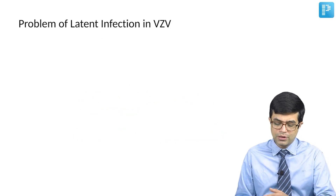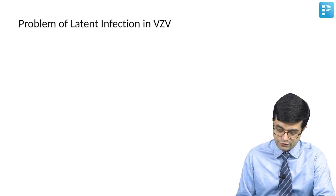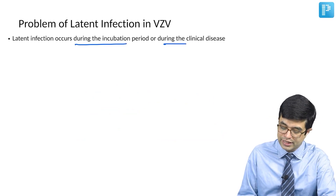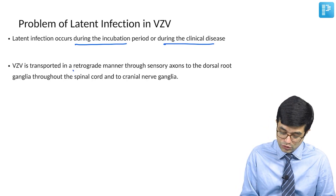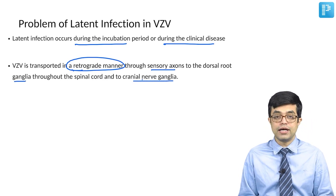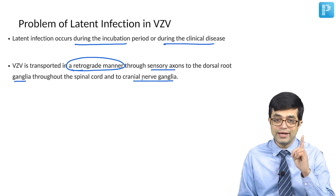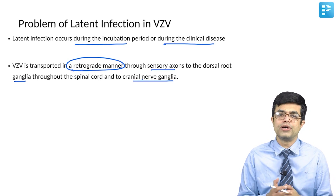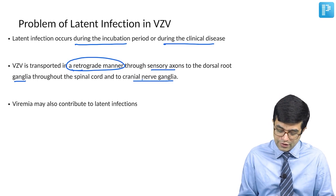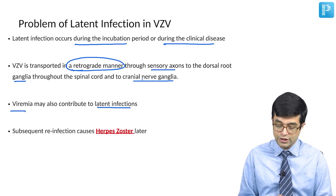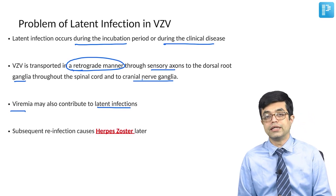There is a problem of latent infection in patients with varicella zoster virus. Latent infection can occur during the incubation period or during the clinical disease. The virus is transported in a retrograde manner through sensory axons to the dorsal root ganglia and to the cranial nerve ganglia as well. The virus lies dormant in ganglionic neurons — it does not exist in non-ganglionic axons or neurons. Viremia can also contribute to latent infections, and subsequent reactivation can cause herpes zoster in later life.